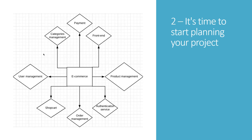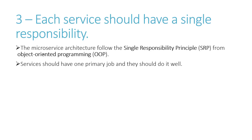Now let me present you some rules about microservice development. The first rule is: each service should have a single responsibility. The microservice architecture follows the Single Responsibility Principle — SRP — from object-oriented programming. It states that services should have one primary job and they should do it well.